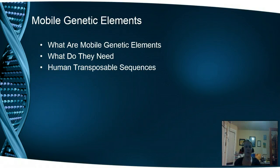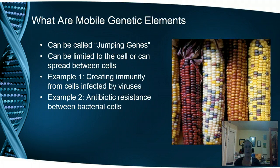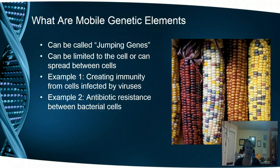Our next topic is mobile genetic elements — parts of our DNA that can actually move around within our genome. These are called jumping genes, and up to 50% of our genome can move around. These jumping genes can either be introduced by a virus or some kind of infectious agent, spread cell to cell, or be limited within the genome of that one cell — for example, a section of chromosome one can jump onto chromosome two. It's not just bad; there are some good examples where this can create immunity. This is also how antibiotic resistance occurs between bacterial cells.